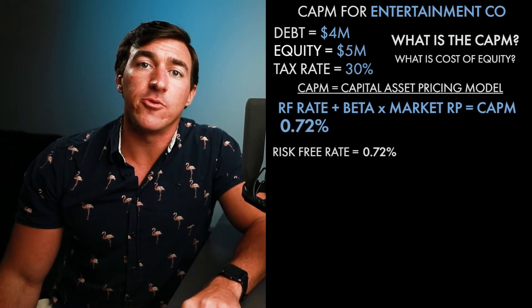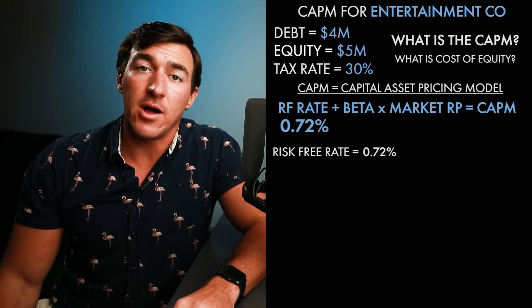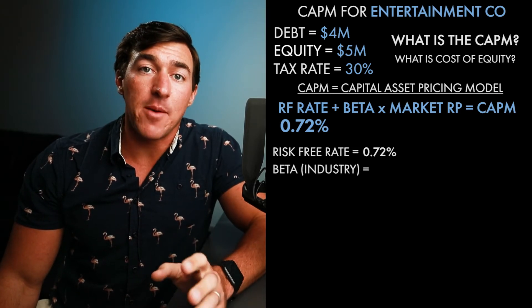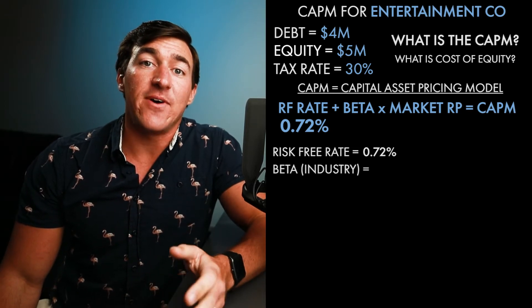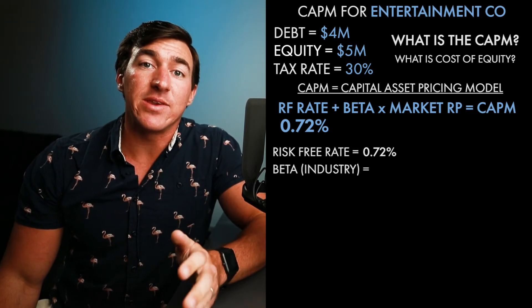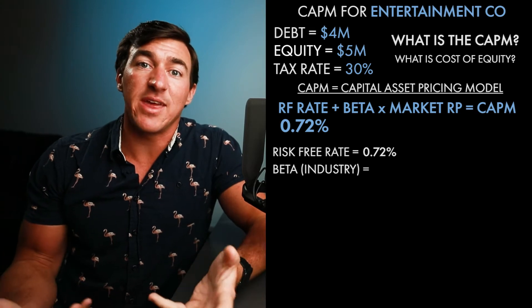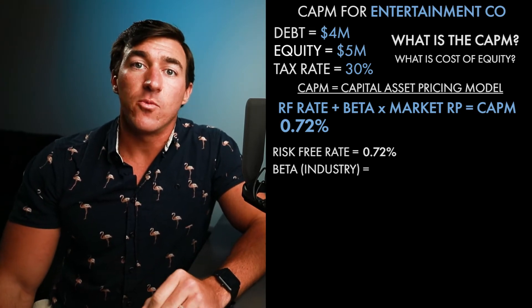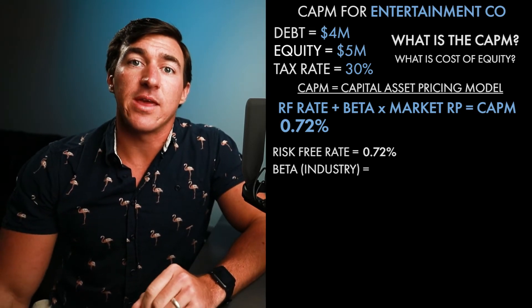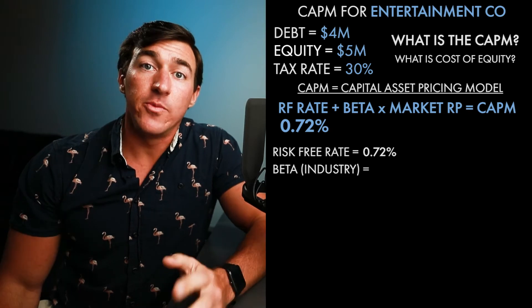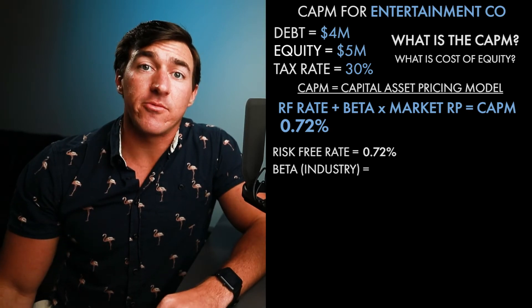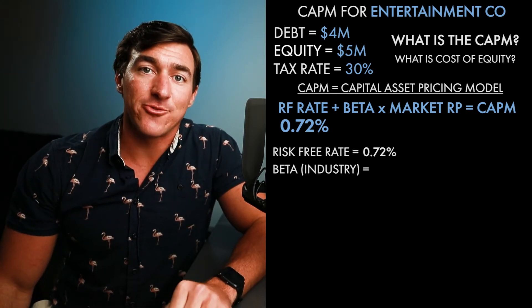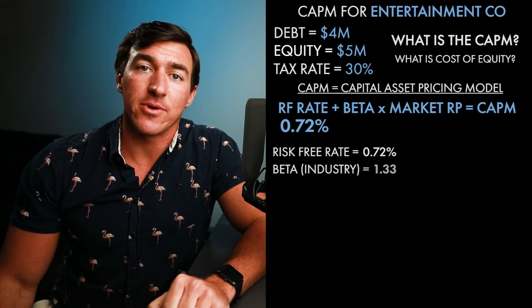So 0.72% plus beta. Now it gets a little bit complicated. We have to find the beta of an entertainment company, or just the entertainment industry in general. So type in: what is the beta for the entertainment industry in NYU? We get our huge list, we scroll down, and at this point in history it's 1.33.